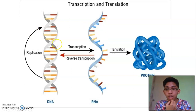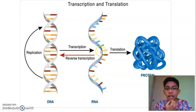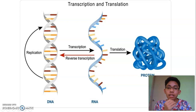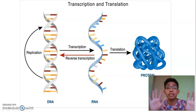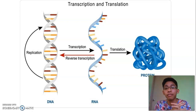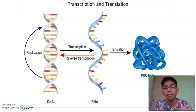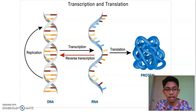So in summary: DNA will be transcribed into RNA, and RNA will be translated into protein. This is a general view of how a protein can be formed from DNA.